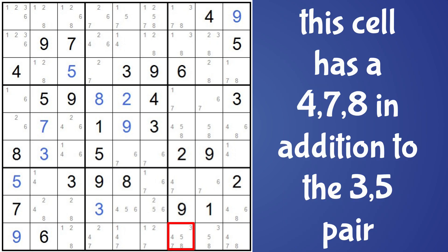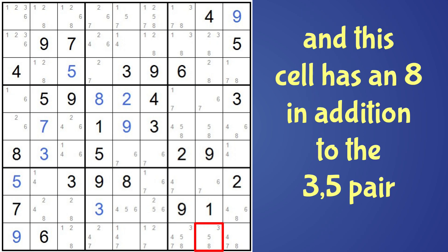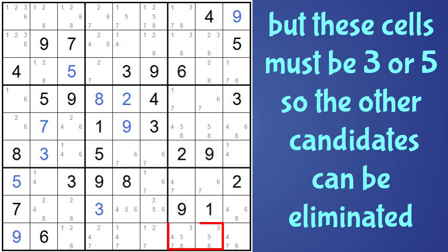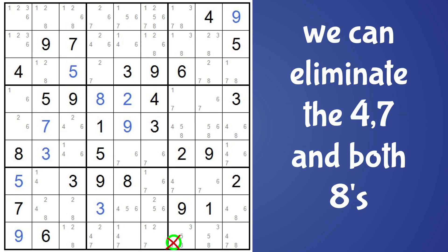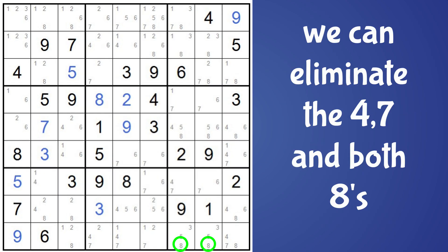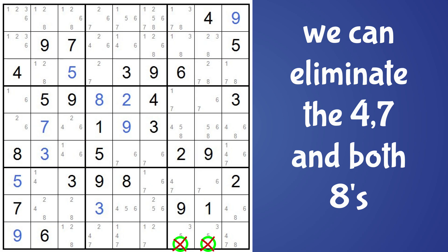In this cell we also have a four, seven, and eight, and in this cell there's an eight. But since these cells must be a three or a five, we can eliminate those other candidates — the four, the seven, and the eights.